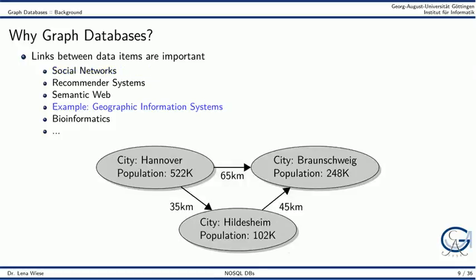An edge qualifies the relationship between two persons. As a second example, in a geographic information system, nodes can represent cities. Cities can have certain properties like a name and a population count, and an edge between two cities can specify the distance between them.